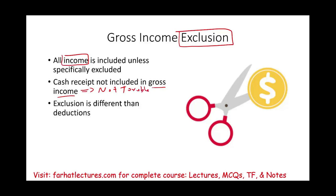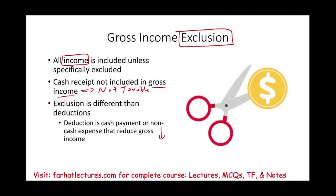Exclusion is different from deductions. Deductions are when you make a cash payment or a non-cash expense that reduces your gross income — that's not what we're discussing. We are discussing when the cash itself is not included in gross income. Specifically in this session, I'll be focusing on two topics: gifts and inheritances.